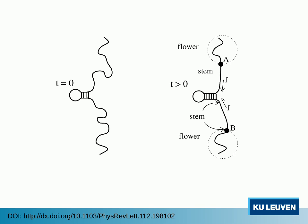A force balance argument then gives rise to a zippering time scaling as n to the power 1.59. The full details can be found in the paper.